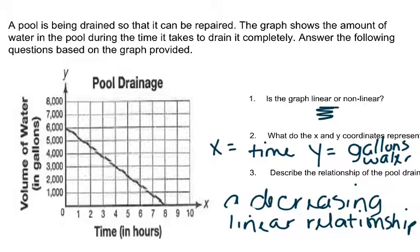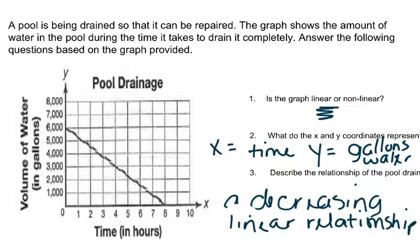That was just a bunch of examples, and every example is going to be a little bit different. You really have to remember to look at the x-axis and the y-axis so that you can understand what you are comparing and describing. Use that information to describe the relationship: is it linear or non-linear, is it increasing or decreasing? Then just tell us about what you see in the graph. We're going to have a bunch of questions about it, so bring your notes, write down everything you need to, and we'll work on it in class.